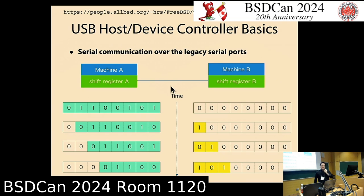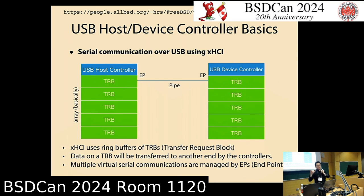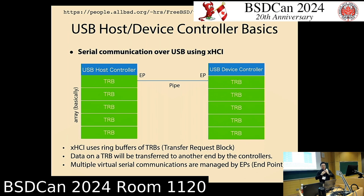The receiver side must check the voltage change and get the data bit by bit. At the lower level, this communication is implemented using a logic called a shift register. Just connecting the wire between two shift registers and applying the clock, you can have the bit string transferred automatically after 8 clocks. USB is much more complex, but the basics have not changed.